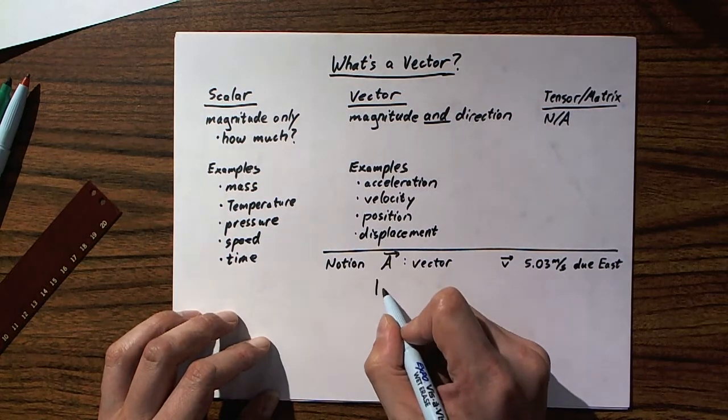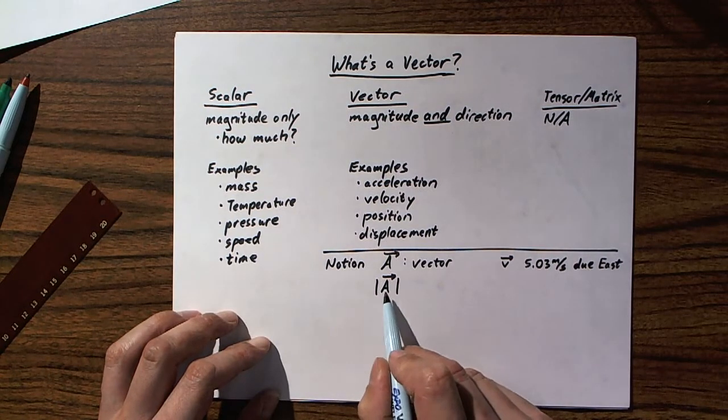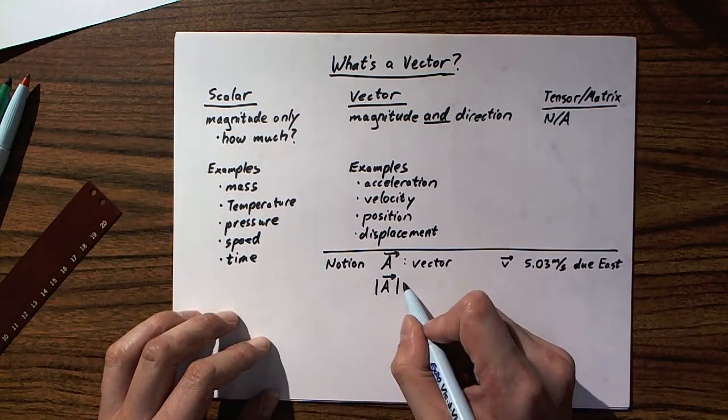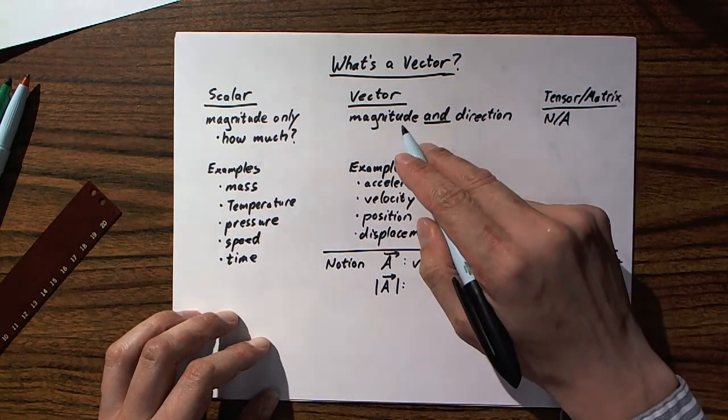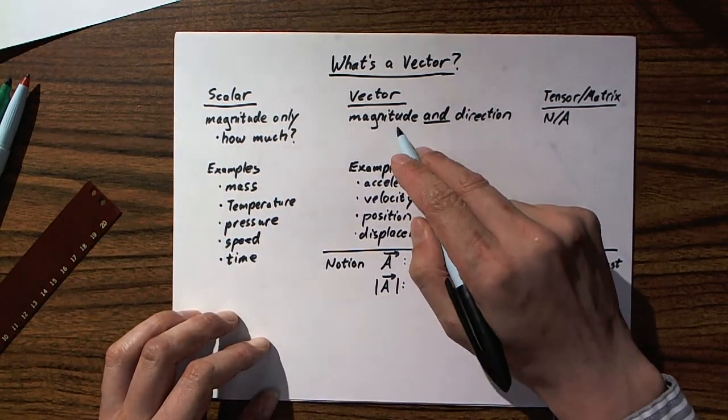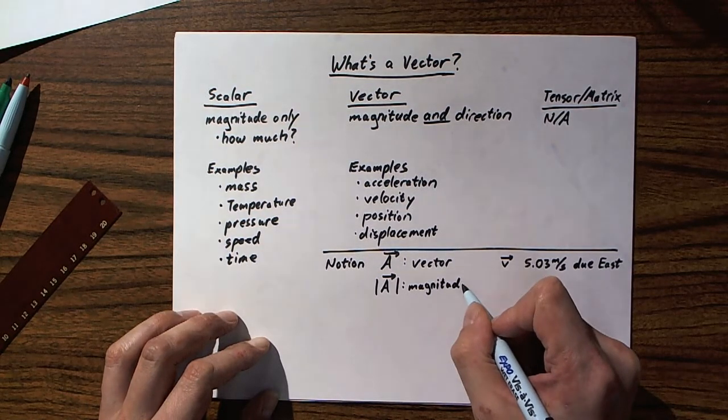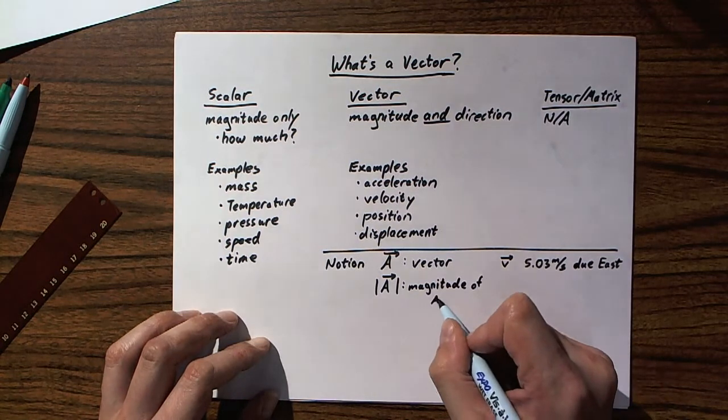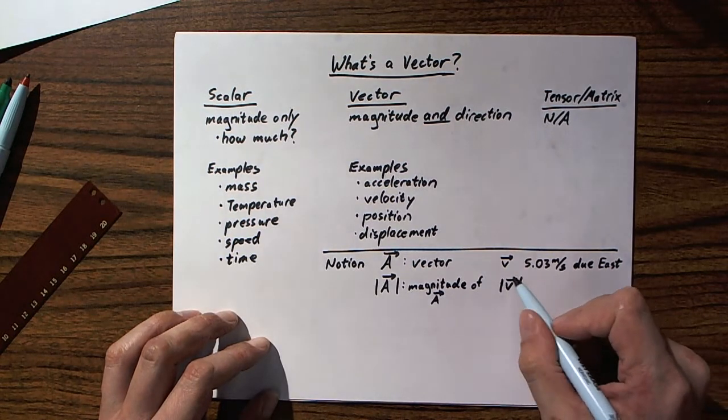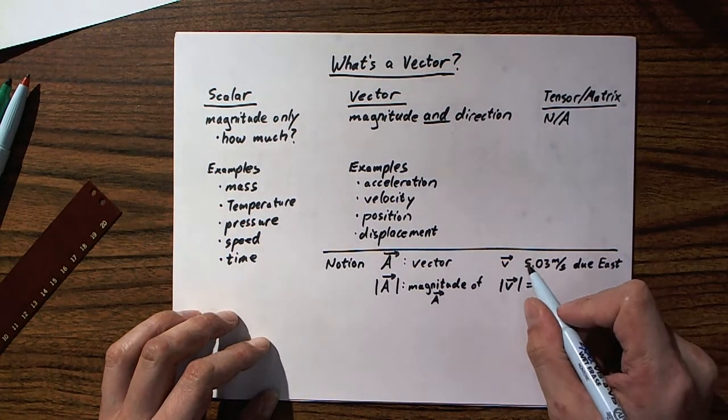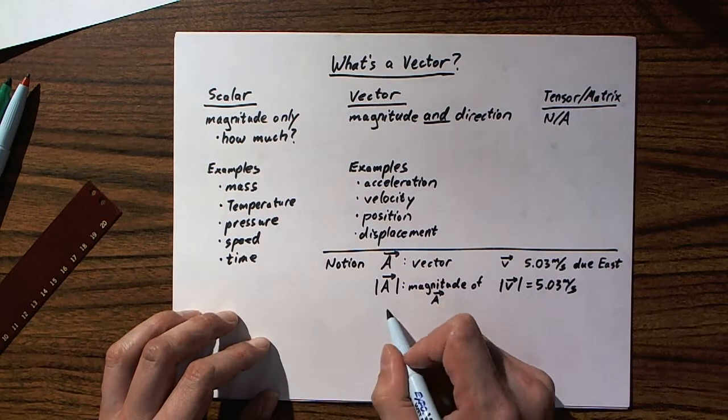Now, if I put absolute value bars around the A, and some textbooks use a double absolute value bar. In math, these bars mean absolute value. In physics, the absolute value bars mean magnitude. So, we're talking about just the magnitude of A. Just the magnitude of the vector. So, if I was to ask you for the magnitude of some of this velocity vector, that would be just how much velocity we have, in other words, the 5.03 meters per second part.